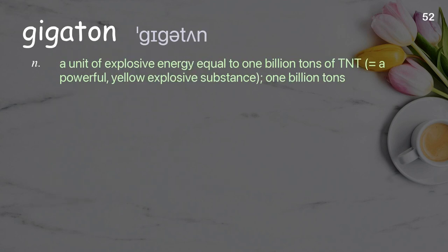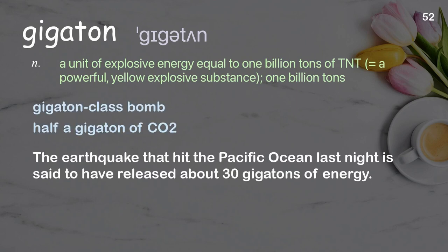Gigaton: a unit of explosive energy equal to 1 billion tons of TNT. Examples: gigaton class bomb; half a gigaton of CO2. The earthquake that hit the Pacific Ocean last night is said to have released about 30 gigatons of energy.